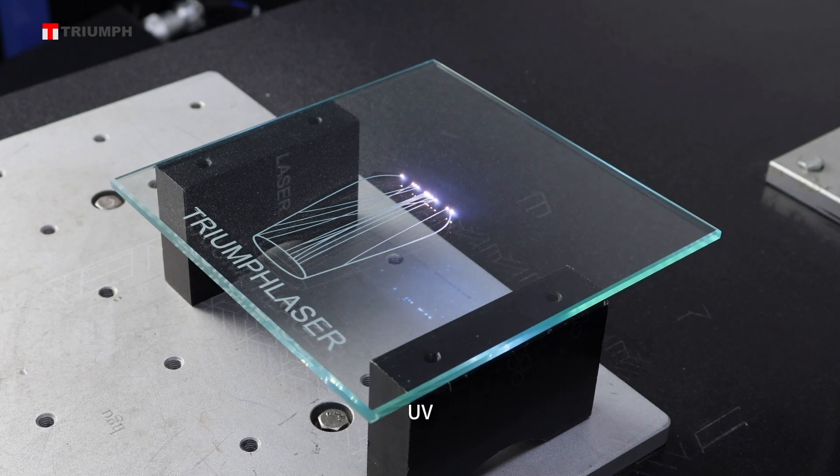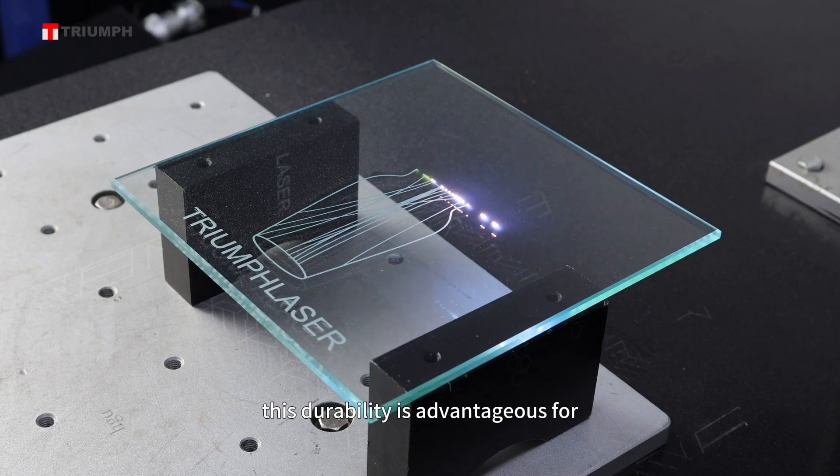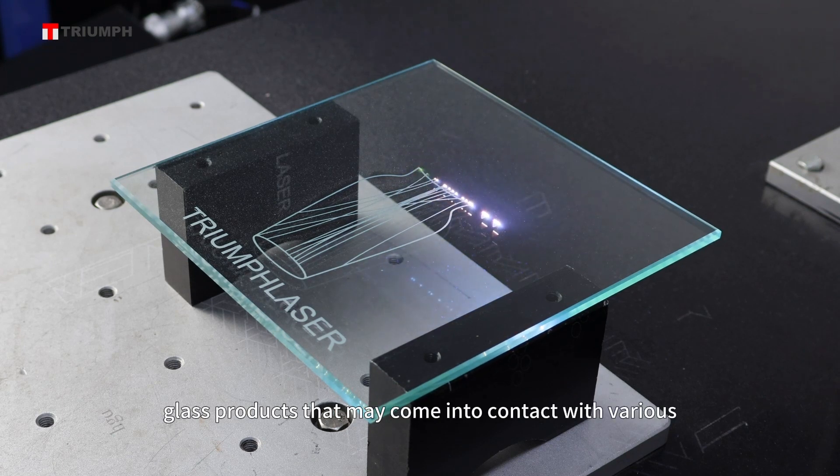Chemical resistance. UV laser marks on glass are highly resistant to chemicals, abrasion, and wear. This durability is advantageous for glass products that may come into contact with various substances during their lifespan.